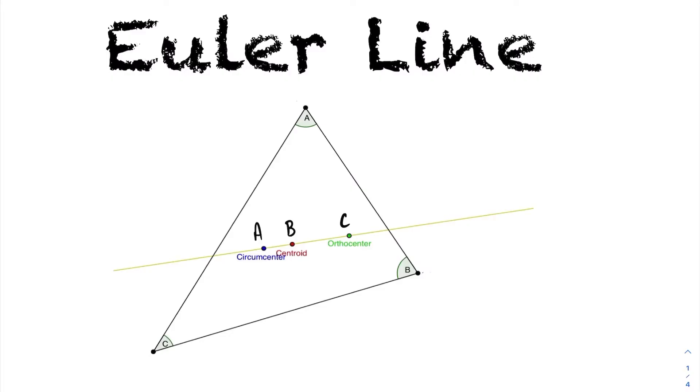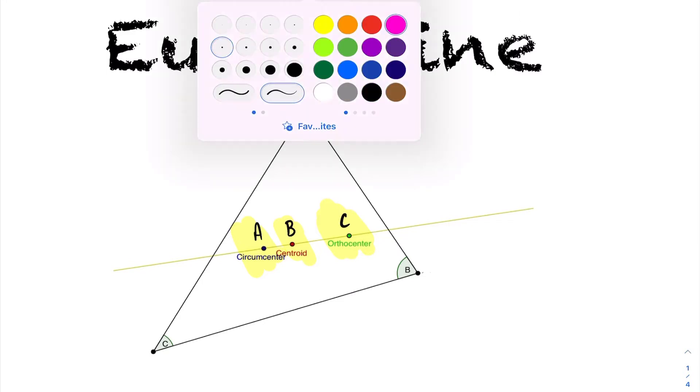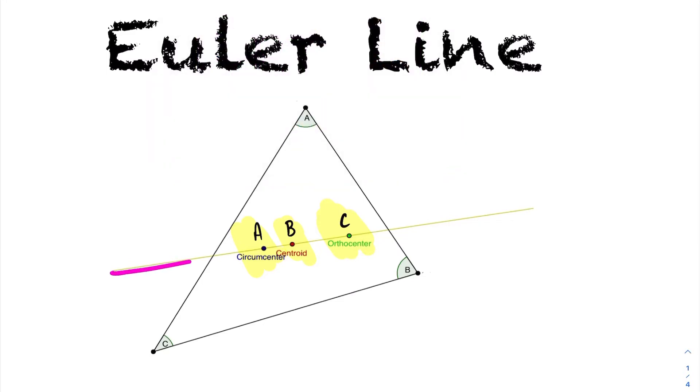We want to take a look at the Euler line. We had already discussed the three centers of a triangle: the orthocenter, the centroid, and the circumcenter. It turns out that all three of these centers of triangles actually lie in the same line, and that line is called the Euler line.